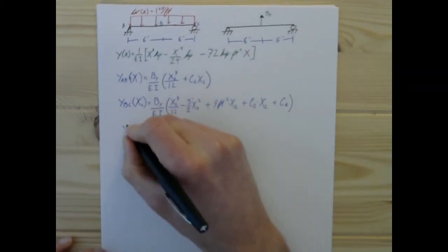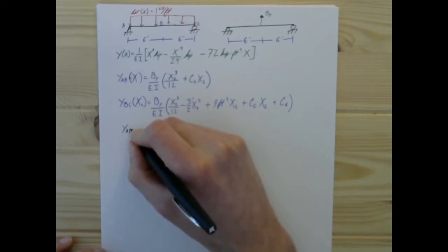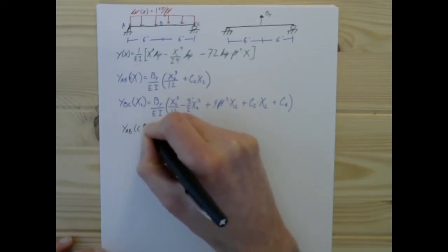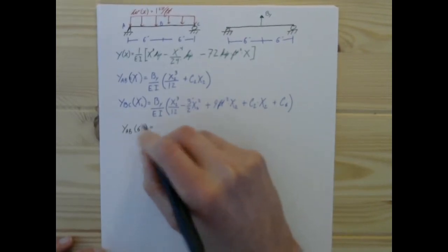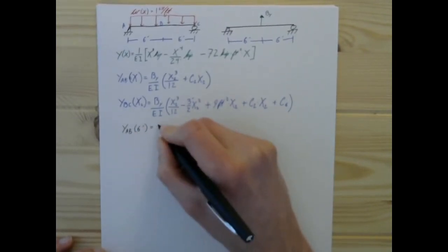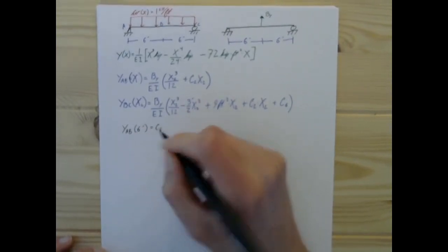So, if we're going to use that, we're going to say that y_ab at 6 feet is equal to C6.